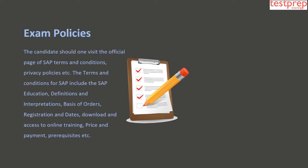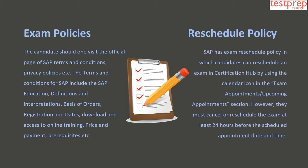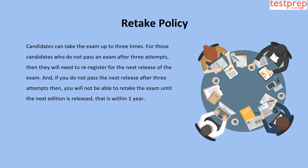Exam Policies. The candidate should visit the official SAP Terms and Conditions and Privacy Policies page. The Terms and Conditions for SAP include SAP Education Definitions and Interpretations, Basis of Orders, Registration and Dates, Download and Access to Online Training, Price and Payment, Prerequisites, etc. Reschedule Policy: SAP has an exam reschedule policy where candidates can reschedule via the calendar icon in the exam appointments or upcoming appointments section; however, they must cancel or reschedule at least 24 hours before the scheduled appointment. Retake Policy: Candidates can take the exam up to 3 times. Those who do not pass after 3 attempts must re-register for the next release of the exam. If they do not pass the next release after 3 attempts, they will not be able to retake the exam until the next edition is released, which is within 1 year.